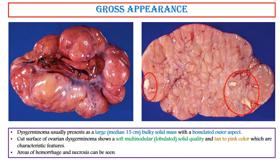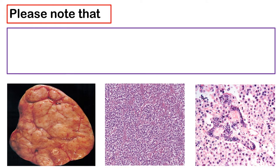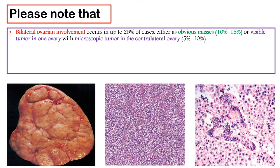Areas of hemorrhage and necrosis can be seen. Bilateral ovarian involvement occurs in up to 25% of cases, either as obvious masses (10–15%), or visible tumor in one ovary with microscopic tumor in the contralateral ovary (5–10%).